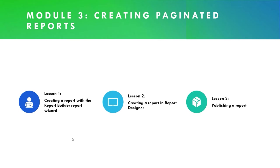Now we get to start creating paginated reports in Module 3. There are three lessons: in the first we'll create a report using the Report Builder Report Wizard; in the second we'll create a report in Report Designer via Visual Studio; and in lesson 3 we'll cover publishing reports.